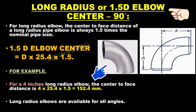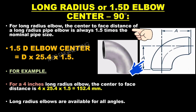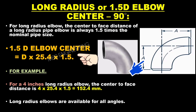Next, we will calculate the elbow pipe center for long radius or 1.5D at 90 degrees. The center-to-end dimension is the length of the elbow measured from the center of its radius to the end of either opening — refer to the accompanying images where dimension 'A' indicates the elbow center. For a long radius elbow, the center-to-face distance is always 1.5 times the nominal pipe size.